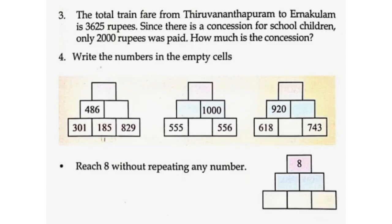The total train fare from Thiruvananthapuram to Ernakulam is Rs. 3,625. Since there is a concession for school children, only Rs. 2,000 was paid. How much is the concession? 3,625 minus 2,000 equals Rs. 1,625. So Rs. 1,625 is the concession.